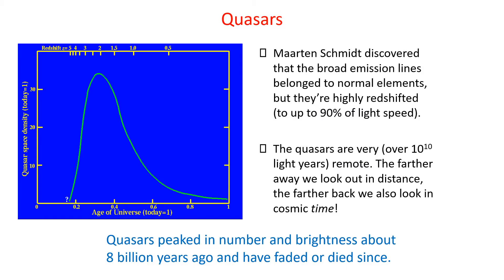Quasars were discovered in 1963 by Martin Schmidt, working at Caltech, who discovered that these broad emission lines, which were not associated with any normal element, because they were at the wrong positions for the lines of hydrogen or helium or any of the elements. The reason why nobody noticed this is because they're highly redshifted, by ten, twenty, or even ninety percent of light speed.